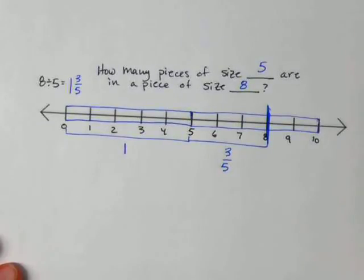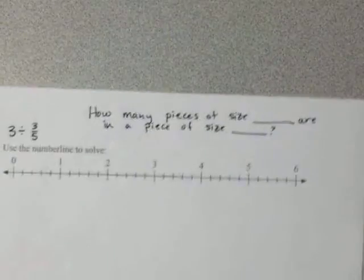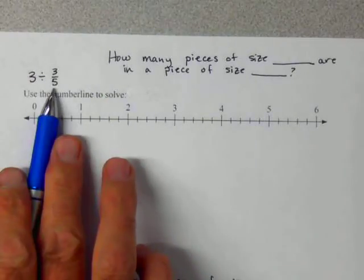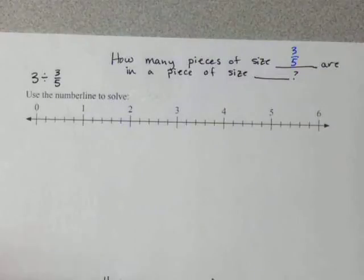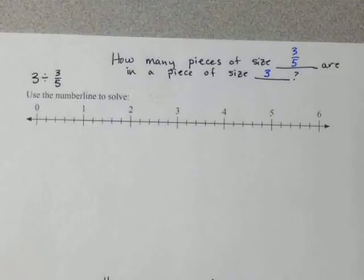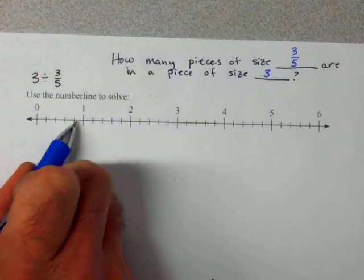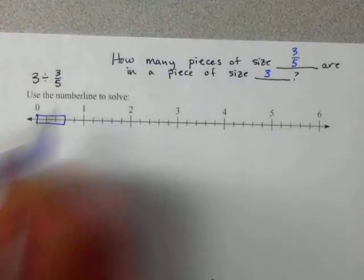Now let's look at what happens when we divide by a fractional amount. The expression here is 3 divided by 3 fifths. Our question is the same: how many pieces of size 3 fifths — a fractional amount — are in a piece of size 3? So let's start by finding 3 fifths. Here's our piece, cut into fifths. I'm going to find a piece of size 1, 2, 3 fifths — that is a piece of size 3 fifths.